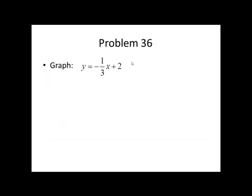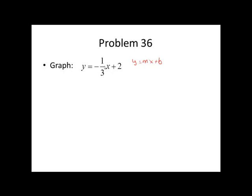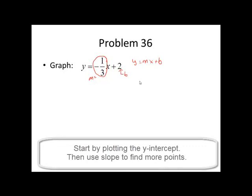Now we'll move on to graphing an equation of the form y equals mx plus b. This equation already has y isolated, and in that case, we know that our slope is the coefficient of the x-term, so it's negative 1 third. That means that this line moves down 1, 3 to the right. b is the y-coordinate of the y-intercept. So this graph has a y-intercept of 0, 2.